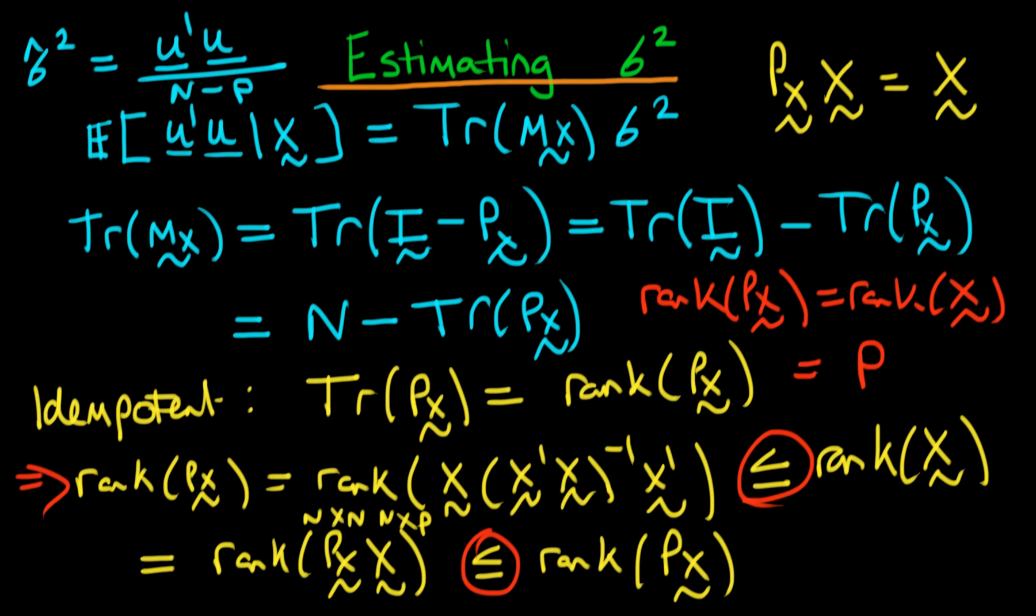So notice the difference here with the version which we suggested before—we've got not just n on the bottom, we've got n minus p. If you correct it by using this factor of p, that means that it's unbiased and it's consistent as well.